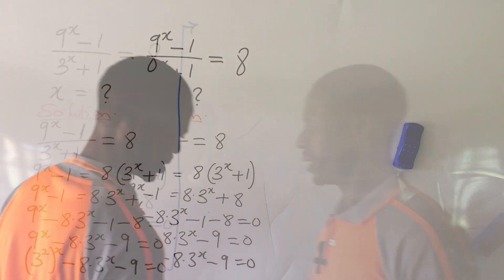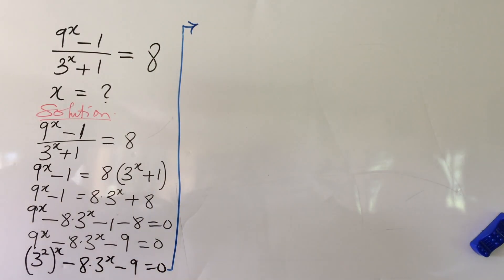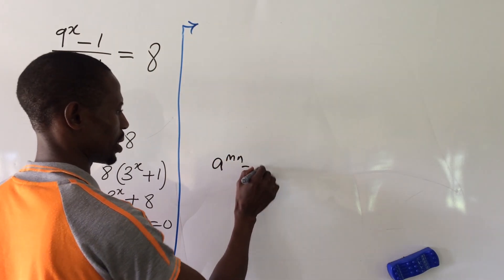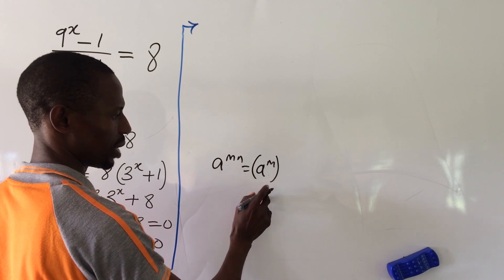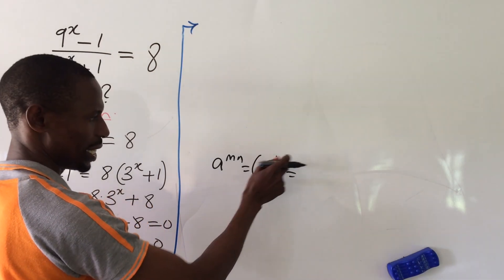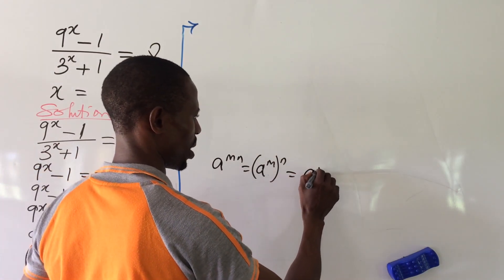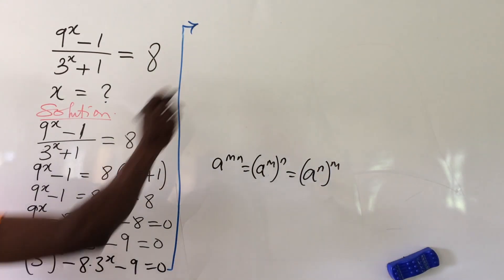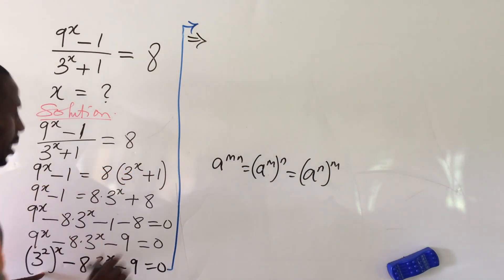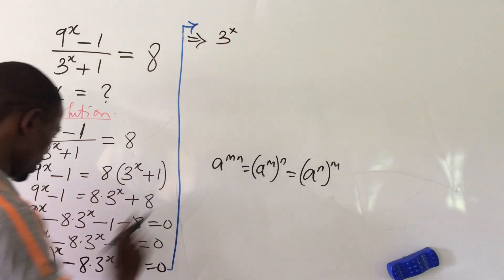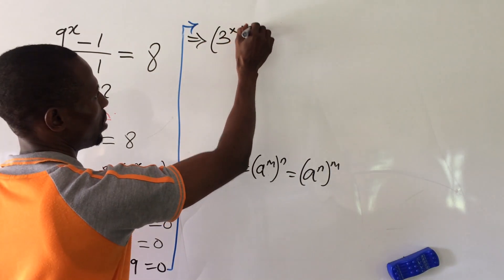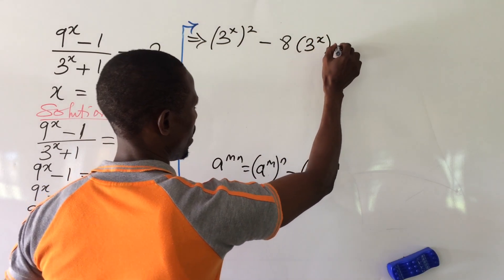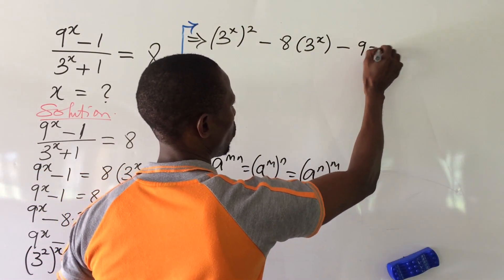According to the law of indices, if you have a^(mn) you can rewrite it as (a^m)^n, or equally as (a^n)^m. Applying that here, our equation becomes: (3^x)² minus 8 · 3^x minus 9 equal to zero.